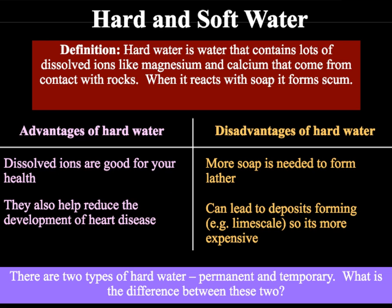So what are hard and soft water? Hard water is water that contains lots of dissolved ions, especially magnesium and calcium that come from contact with rocks. When it reacts with soap it will form scum — a useless white precipitate that forms instead of lather when hard water comes into contact with soap.